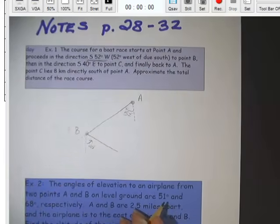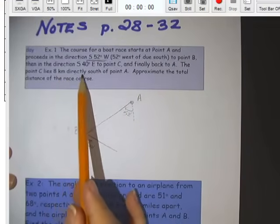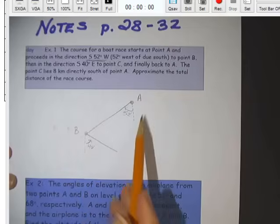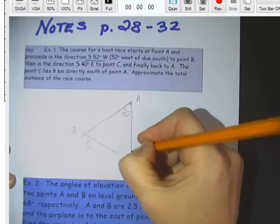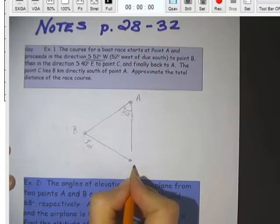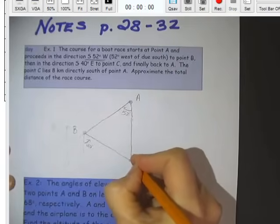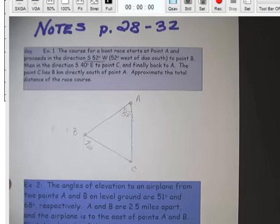And we're moving towards C. Now notice up here it says C lies 8 kilometers directly south of point A. So we're going to end up due south of point A. So there's our point C. So we have this triangle. Notice it is not a right triangle. So using law of sines and law of cosines, we don't need right triangles anymore.